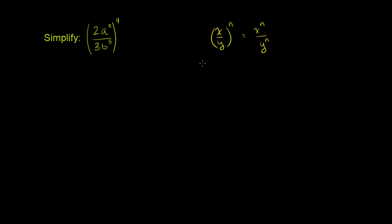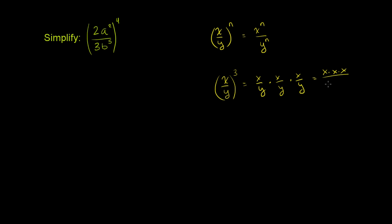We can see that with an example real fast. If I had x over y to the third power, what would this equal? It would be x over y times x over y times x over y, which equals x times x times x over y times y times y. This is clearly x to the third over y to the third.